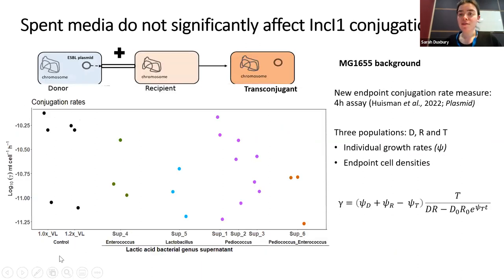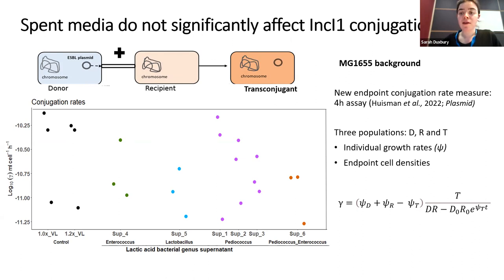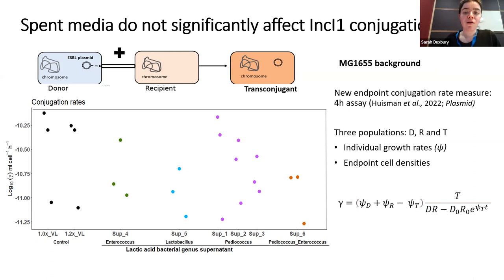We then looked at conjugation rates — the effect of the supernatant media on rates of plasmid transfer. We used an endpoint conjugation rate measure rather than a conjugation frequency, taking into account different growth rates of the three populations and the start and endpoint population densities to control for cell-contact opportunities across different conditions. We saw quite a lot of variability across data points but no significant effect of the supernatant media on conjugation rates.